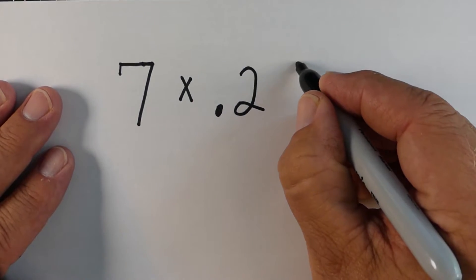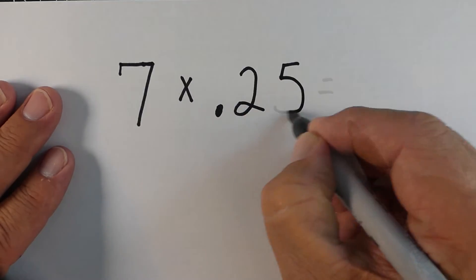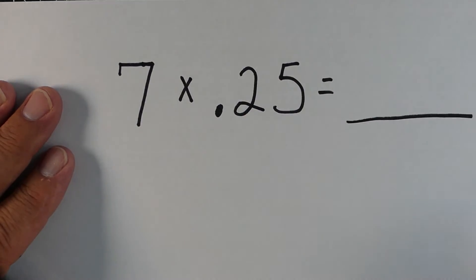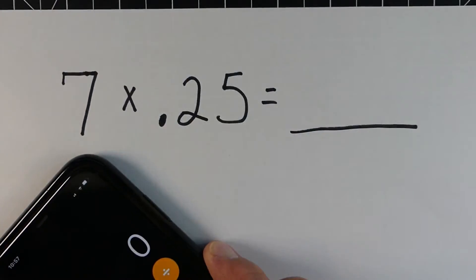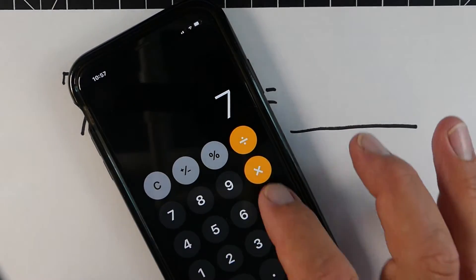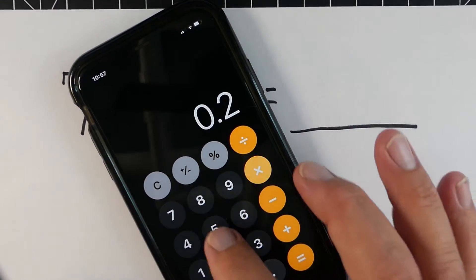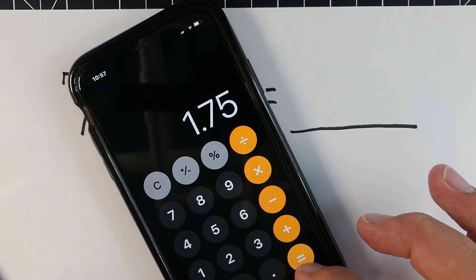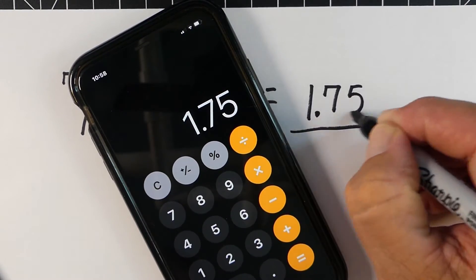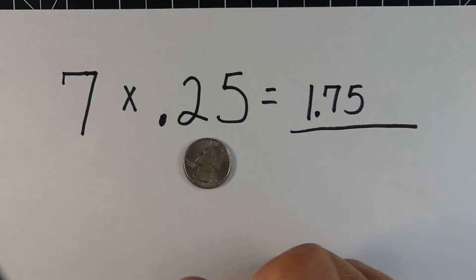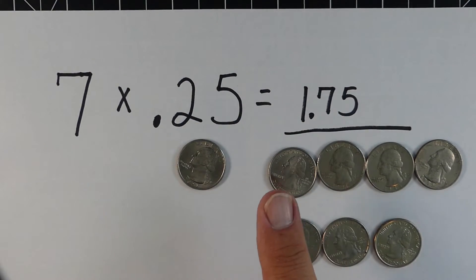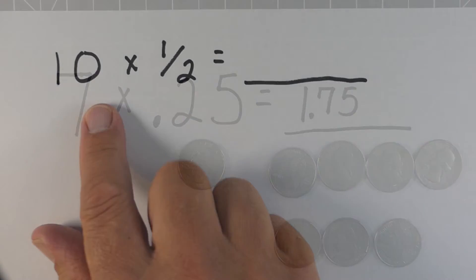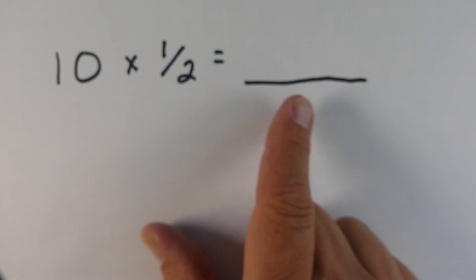Here's another example: 7 times 0.25. We go ahead and multiply that out, and you're going to see an answer that's less than 7. In this case, it's 1.75. Using money as our theme, the 0.25 would be like saying a quarter, and you would have $1.75.